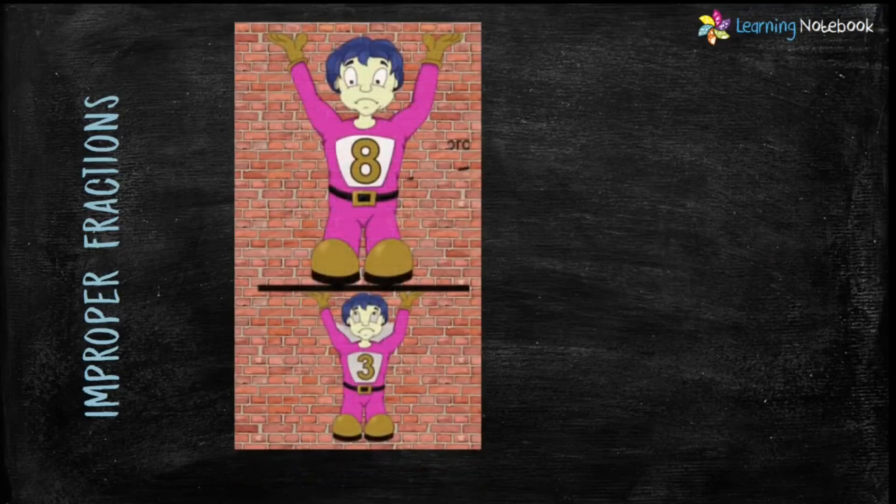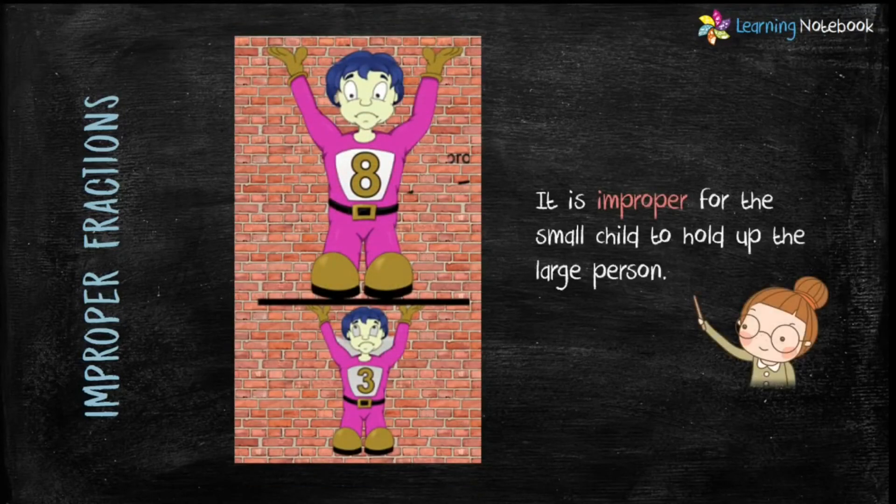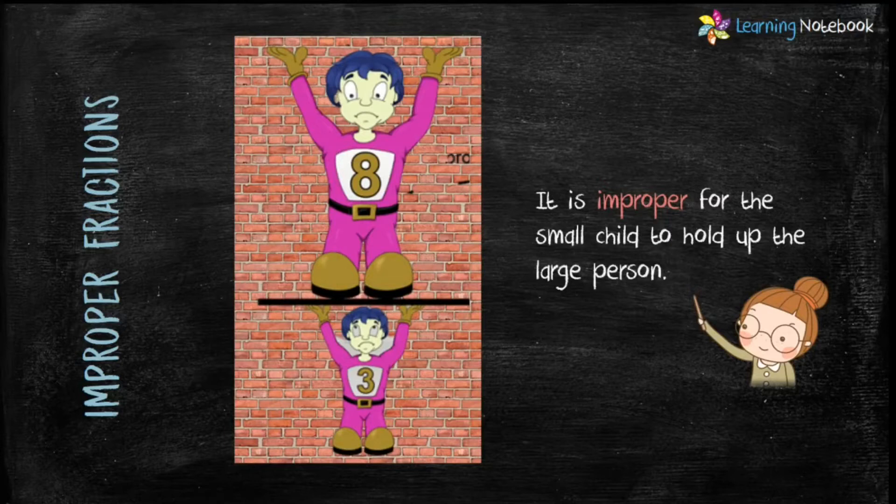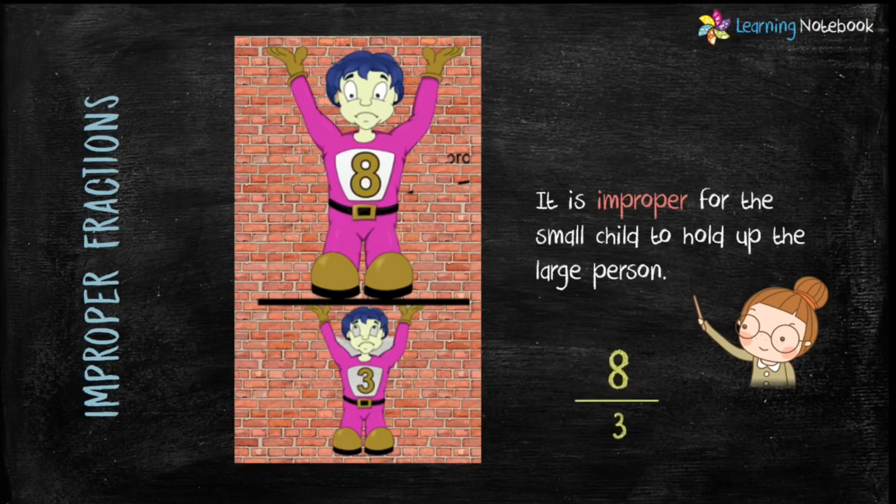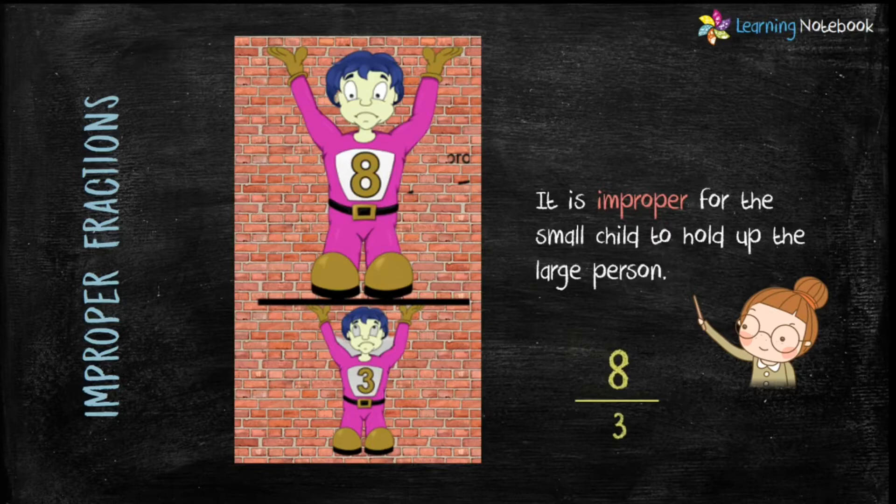Now what if a small child holds up a large person? It is improper. Therefore, fractions like 8 by 3 is an improper fraction because 3 is a smaller number and it is holding up the larger number 8.